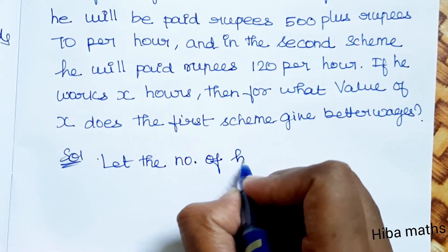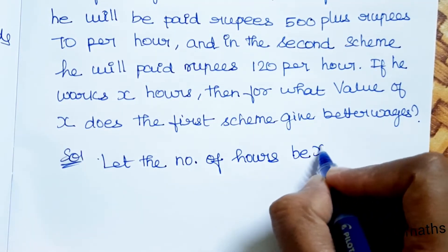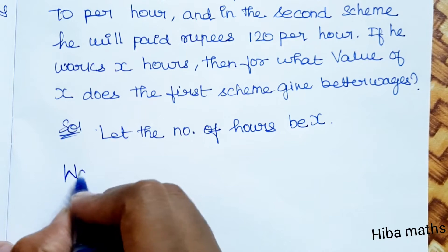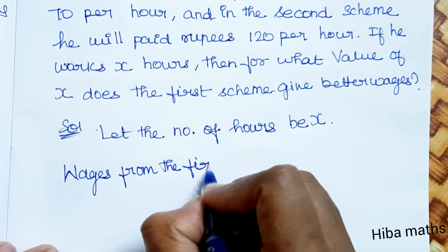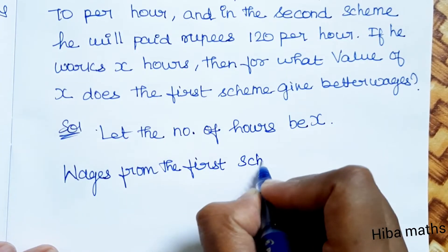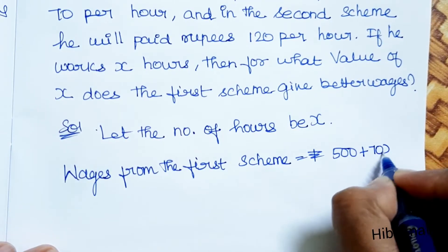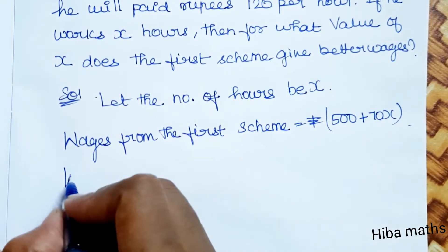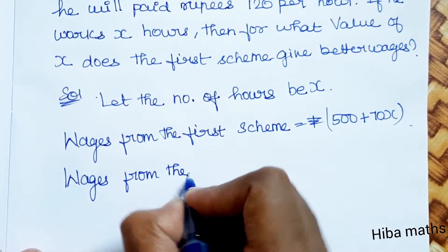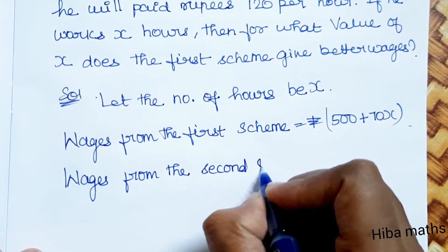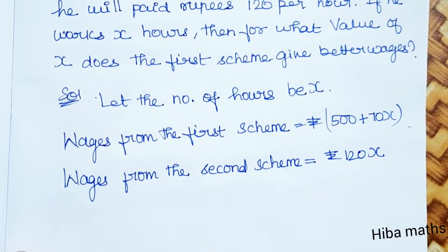Let the number of hours be X. Wages from the first scheme: the first scheme is 500 plus 70 per hour, that means 70 per hour. Wages from the second scheme: 120 per hour.